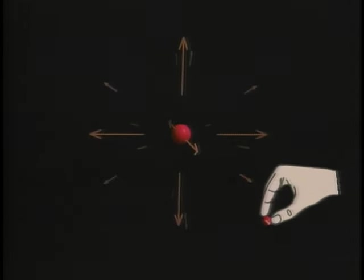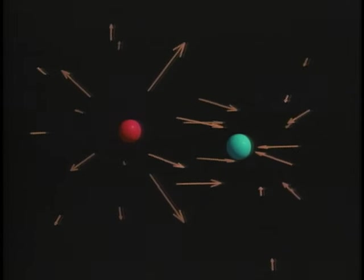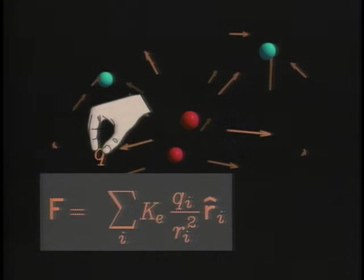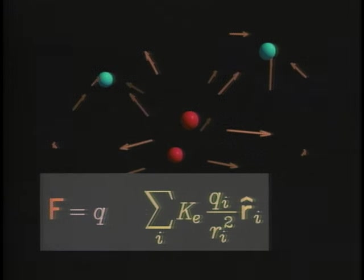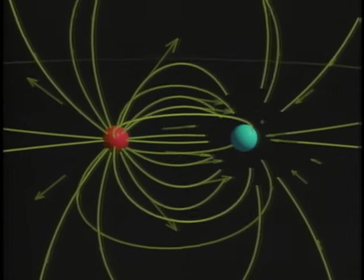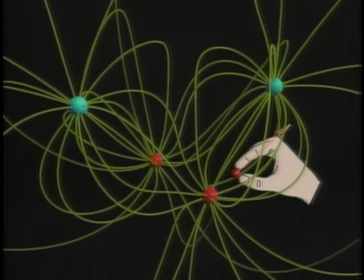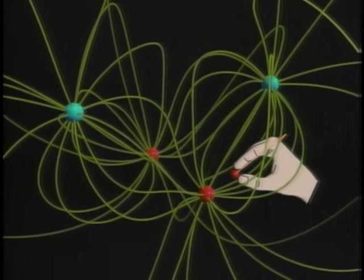Mark the force at each point in space to show the force field. Factor out the strength of the test charge. The remainder is the electric field. Electric fields are represented by lines drawn tangent to the field vectors. Lines bunch up where the field is strong, and they spread apart where it's weaker.